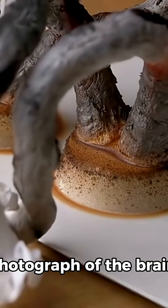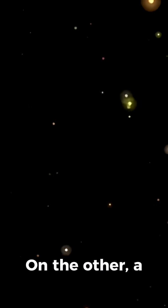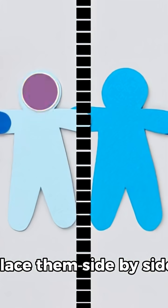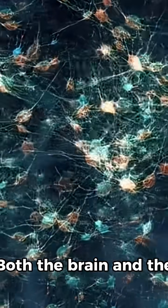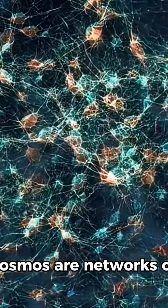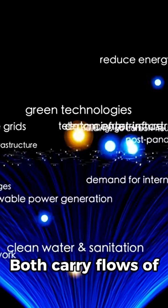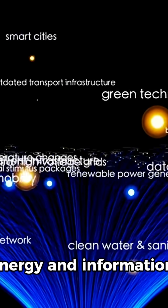On one side, a photograph of the brain. On the other, a map of galaxies. Place them side by side, and you would struggle to tell them apart. Both the brain and the cosmos are networks of nodes connected by filaments. Both carry flows of energy and information.